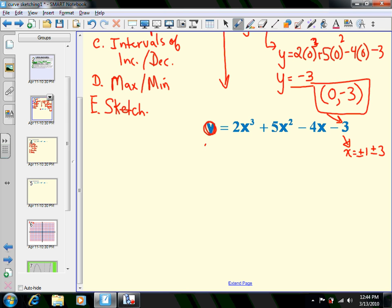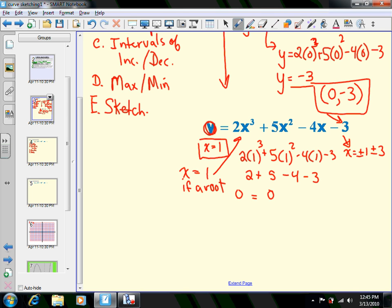I will try x = 1 and see what happens. 2(1)³ + 5(1)² - 4(1) - 3 ends up being 2 + 5 - 4 - 3, which does indeed equal zero. That tells me when x = 1, that is a root of this equation. So (x - 1) is a factor of the equation, and I will now do polynomial division.